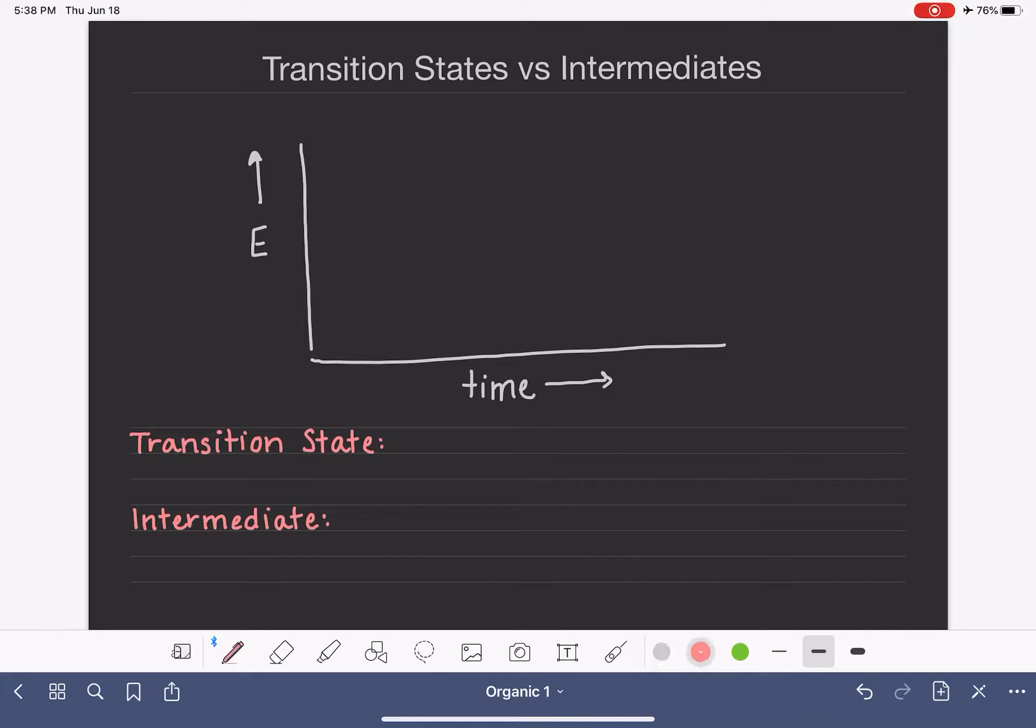You've probably seen quite a bit of single step energy diagrams. This would be an exothermic energy diagram where we have reactant A being converted to product B in a single step.